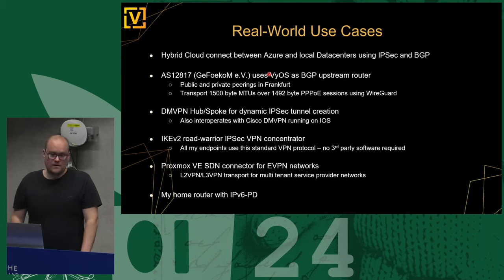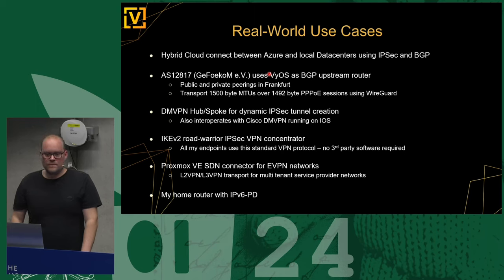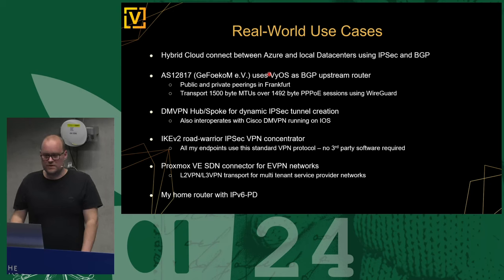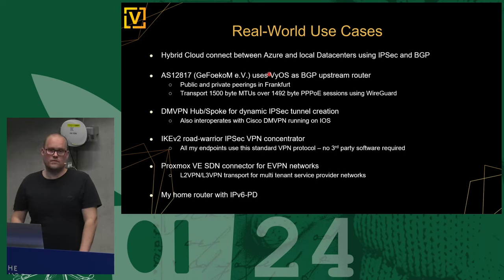I also use IKEv2 Road Warrior support shipped with StrongSwan — the de facto standard IPsec client built into every OS: iOS, Windows, Linux. We can also run VyOS on Proxmox with the Proxmox SDN controller; Proxmox SDN spans layer 3 and layer 2 networks across multiple nodes, and you can connect those to a VyOS router to inject a full BGP routing table into the Proxmox EVPN overlay. And of course, my home router runs VyOS for IPv6 and prefix delegation.